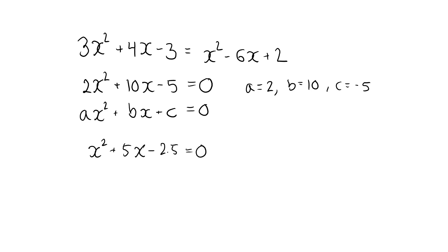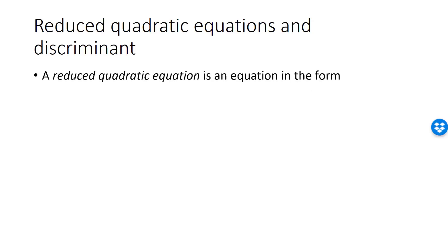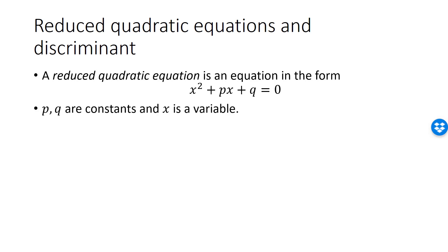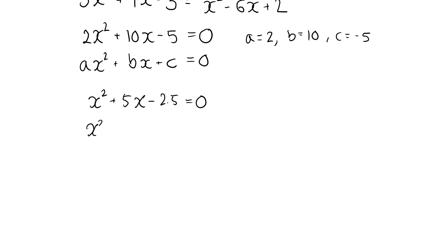It is common to use the symbols a, b, and c when working with a quadratic equation that is not reduced. The reduced quadratic equation typically uses the symbols p and q, and is written as x squared plus px plus q equals 0. In my reduced equation, p is 5 and q is minus 2.5. This lecture deals with reduced quadratic equations only.